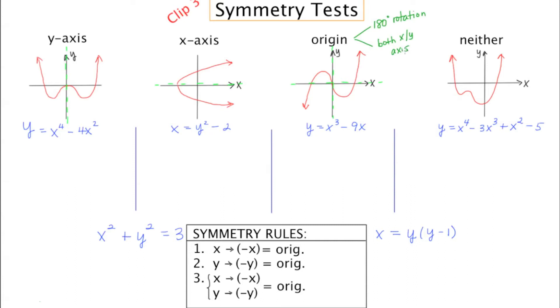I've also included a graph that doesn't have any symmetry at all over here to the right, just so you can see that folding it over the x- or y-axis would not make a difference — it would look like a very different graph if you did that.